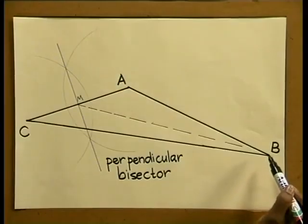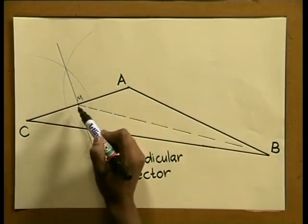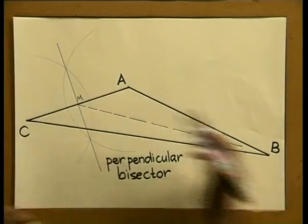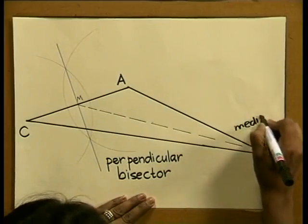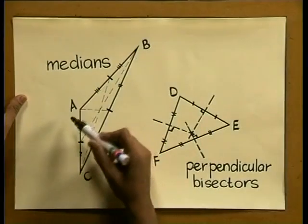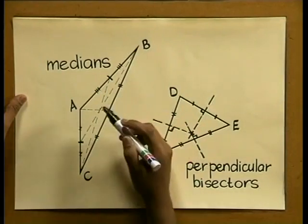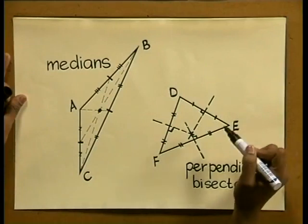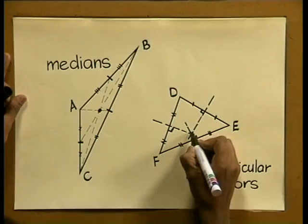The second line we constructed passes through point B and the midpoint of line segment AC. Point B is a vertex — a special point in a geometric shape where two or more lines or edges meet. The line BM is called a median, defined as a line from the vertex of a triangle to the midpoint of the opposite side. The triangle has three vertices and therefore has three medians. In triangle ABC, the medians are concurrent — they pass through one point. The perpendicular bisectors in triangle DEF are also concurrent.